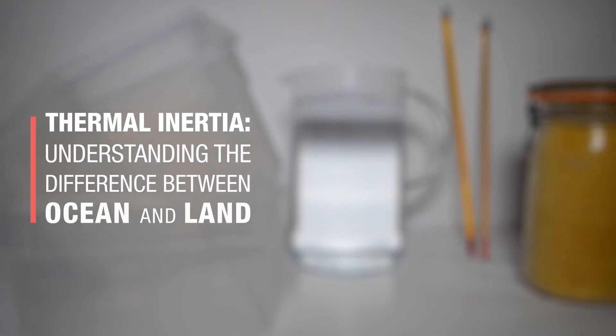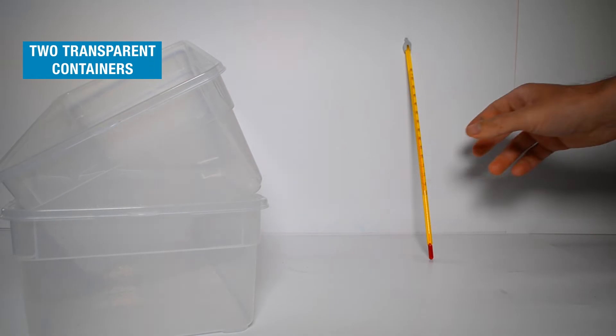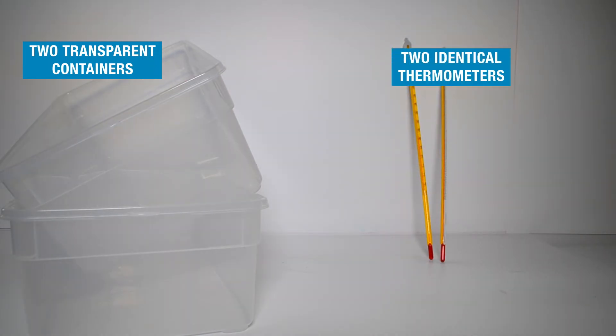In order to show the difference between the thermal inertia of the water and that of the land, we suggest the following experiment. Let us take two transparent containers of the same capacity and two identical thermometers. We then use a different setup for the two containers.